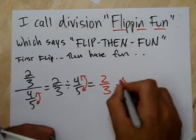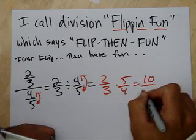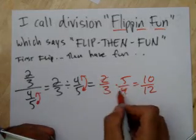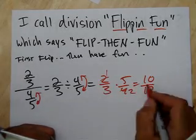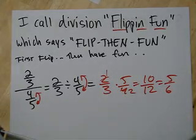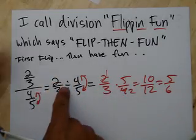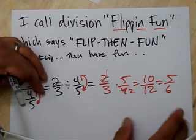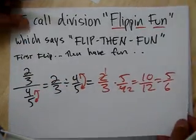So I'm going to change it to two-thirds times five over four to give me ten-twelfths. Or I got five over six, which I can still reduce here. Five over six, anyway. So division is flip and fun. So dividing is the same thing as multiplying by the reciprocal, and we like this. We like this a lot.